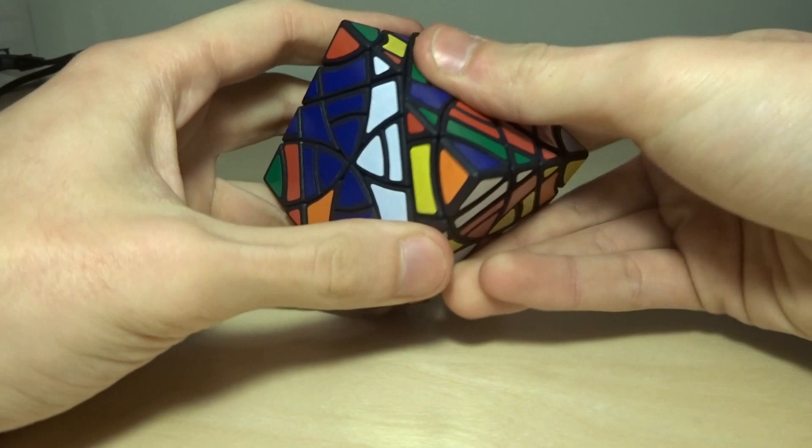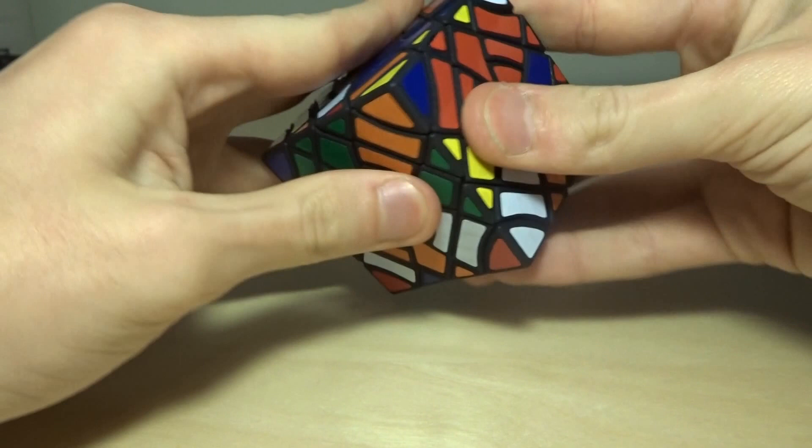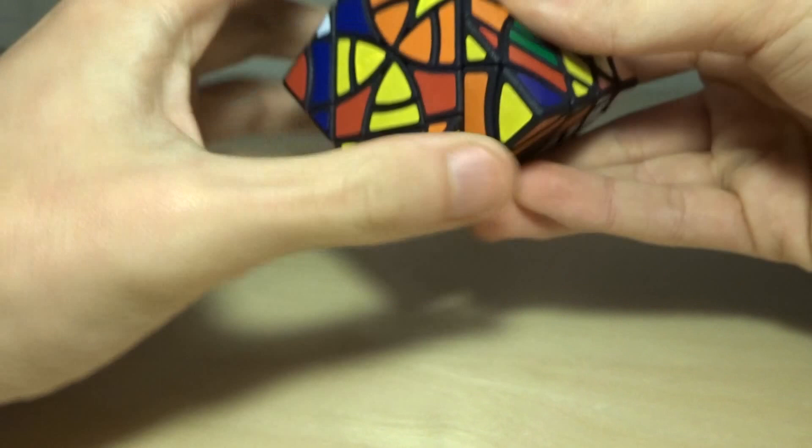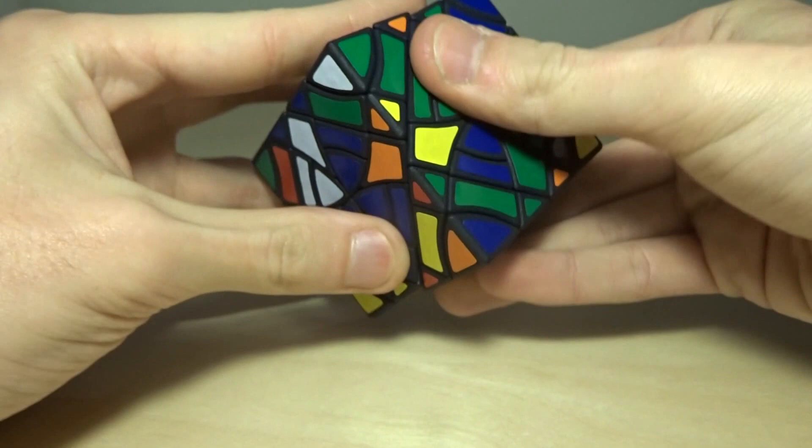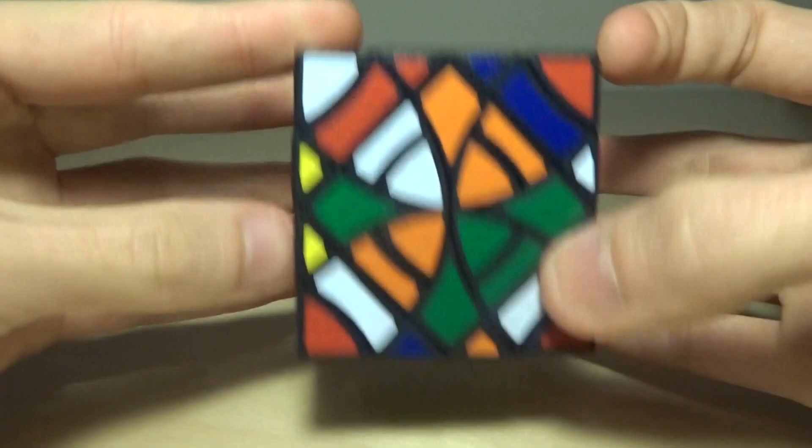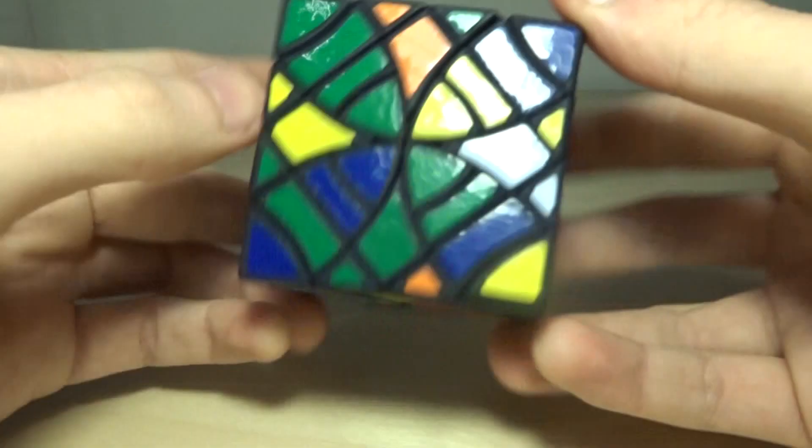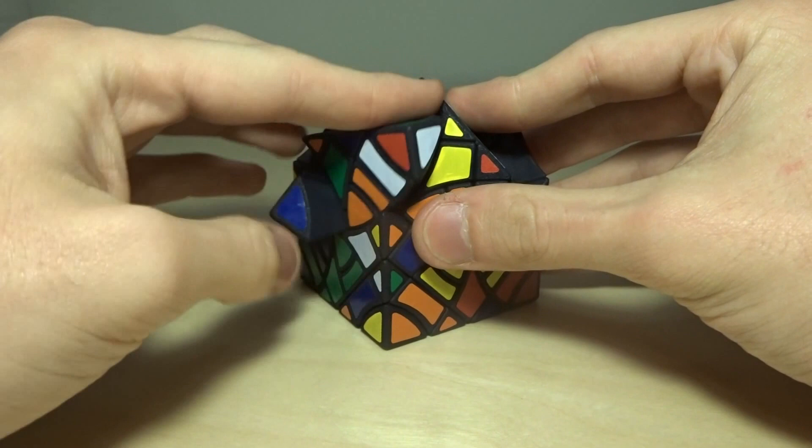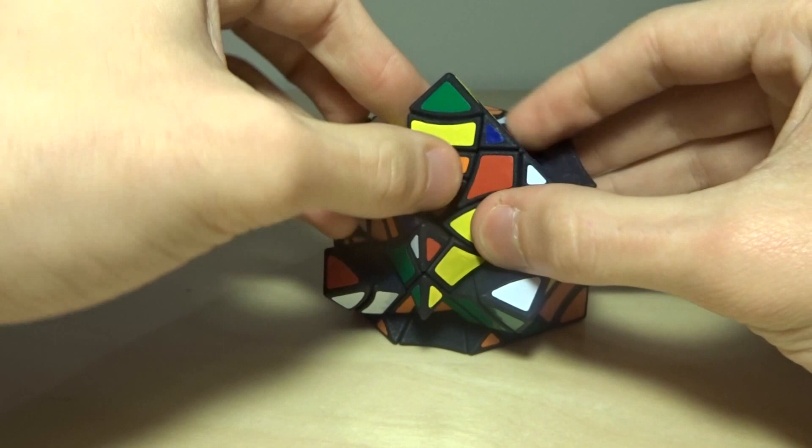The puzzle sometimes can get a bit locked up, because the layers are just so easy to turn. Sometimes they turn without you wanting them to. But that can just be easily solved by adjusting the tensions. It's not a big deal at all. So, this is what the puzzle looks like when it's doctrinally scrambled, as you can see. And now I'm just going to start doing some jumbling moves so you can see how crazy this puzzle can get.